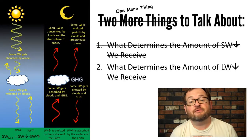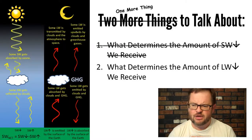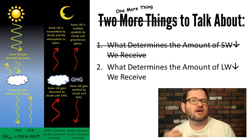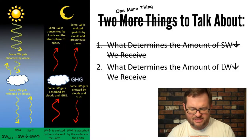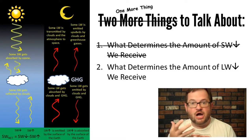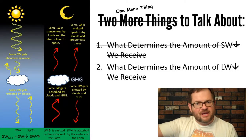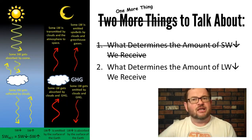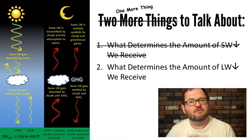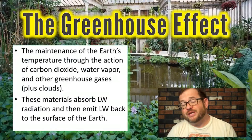The only thing we have left is to talk about longwave radiation coming down from the sky. As you remember from the first part of this lecture, that comes from the greenhouse gases and clouds in the Earth's atmosphere. Greenhouse gases like carbon dioxide, methane, and water vapor, as well as clouds, emit a lot of longwave radiation — some upward toward outer space, but a lot of it back down toward the ground, warming it up. That is called the greenhouse effect.